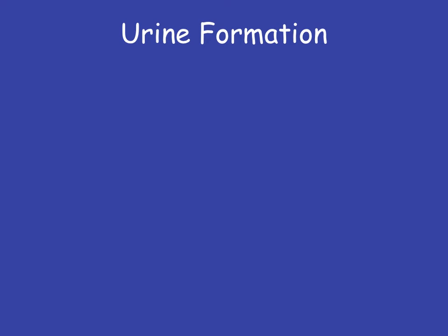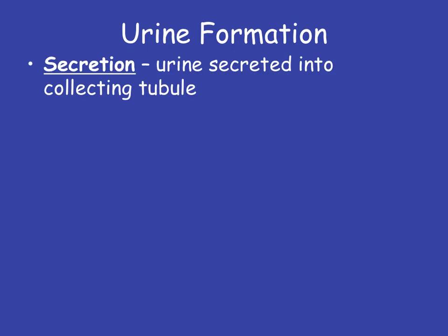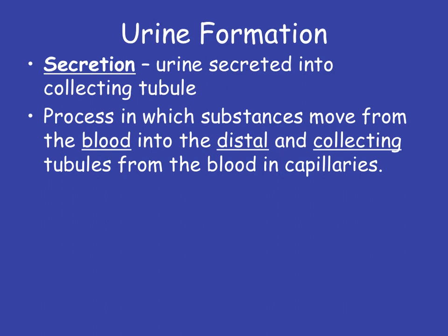Once I've filtered the blood — pushed everything out and reabsorbed what we want back in — I still need to push some other things in and force them in at the very end. And that's the process of secretion. This is where the urine is secreted into the collecting tubule. Substances are going to move from the blood into the distal convoluted tubule as well as the collecting tubules. So there's a capillary net that lies over the nephron, and it's going to push these substances out of the blood and into the urine.